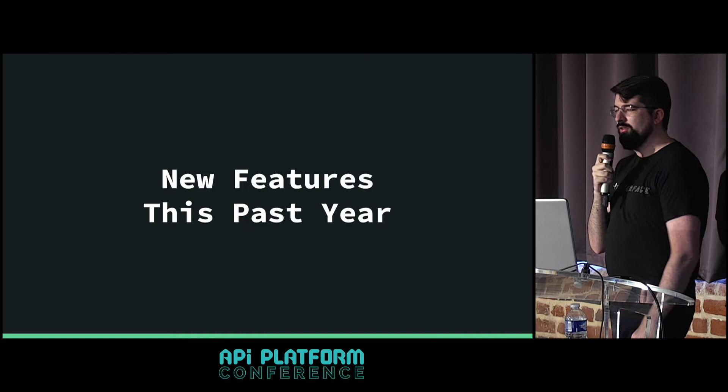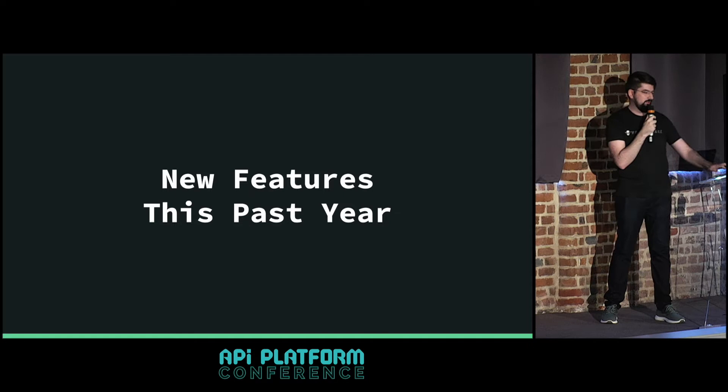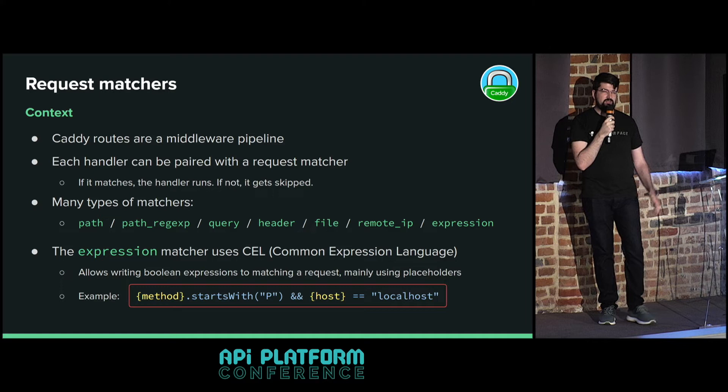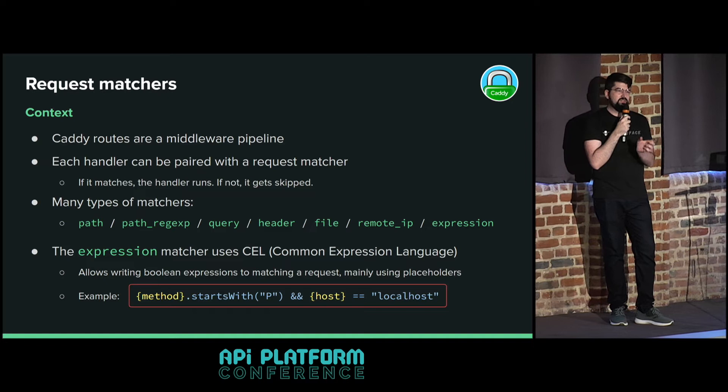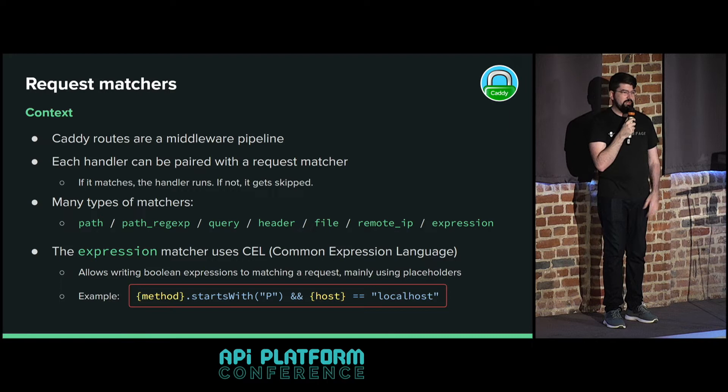Now to the new features we've built in Caddy during this past year. First, request matchers. In Caddy, routes are a middleware pipeline. In the routes you have handlers - things that do things in Caddy - and usually a handler is paired with a matcher. A matcher is a condition that decides whether the handler should run: if the matcher matches, the handler runs; if it doesn't, it gets skipped and goes to the next handler.